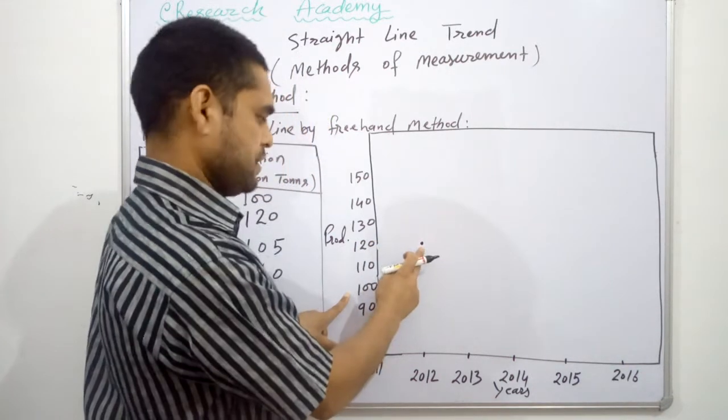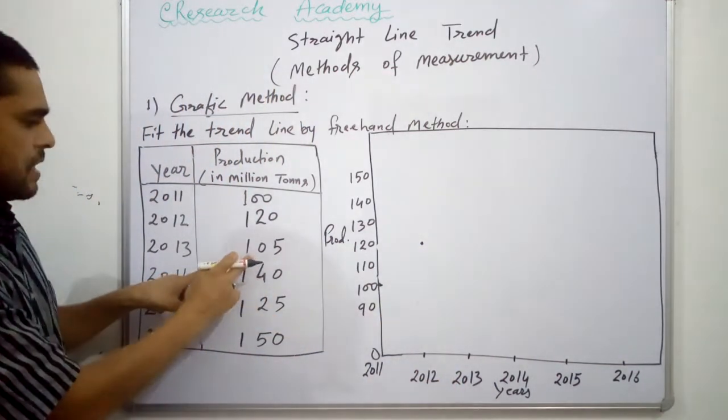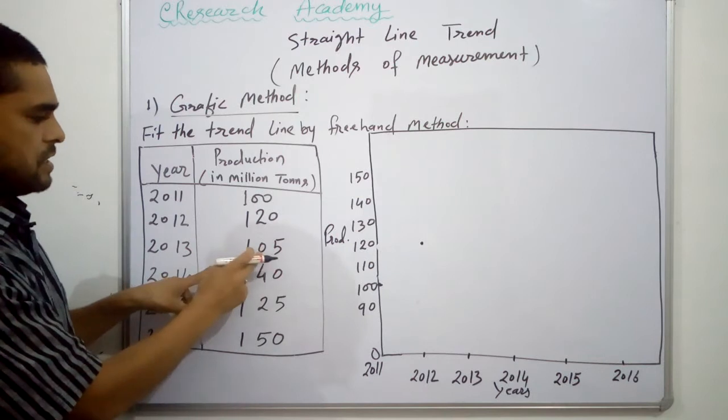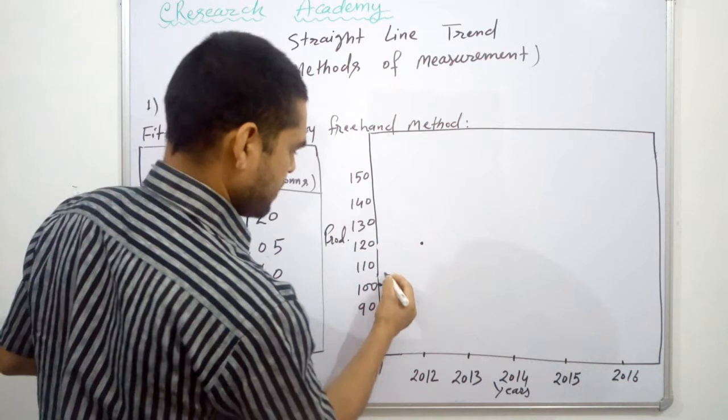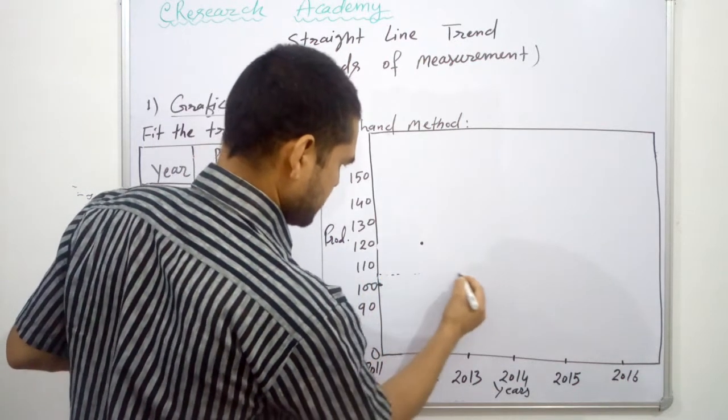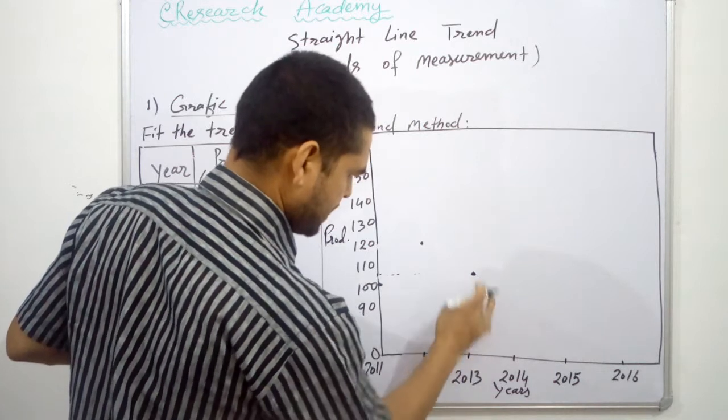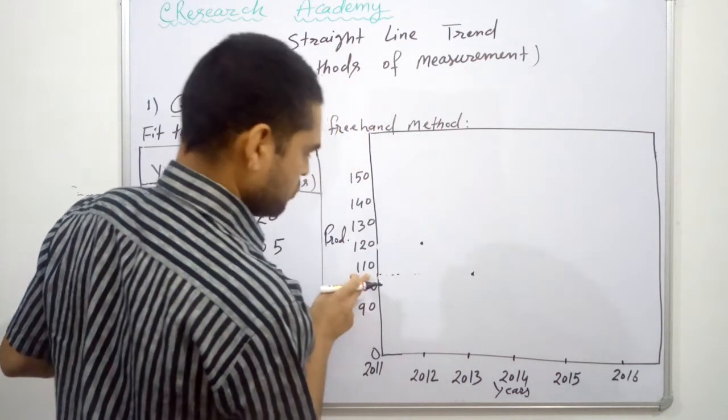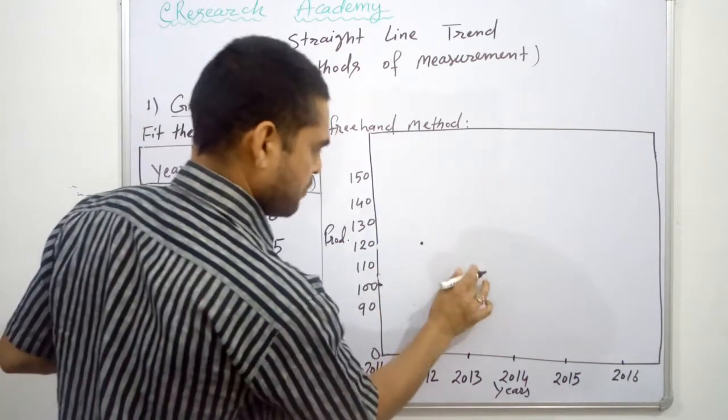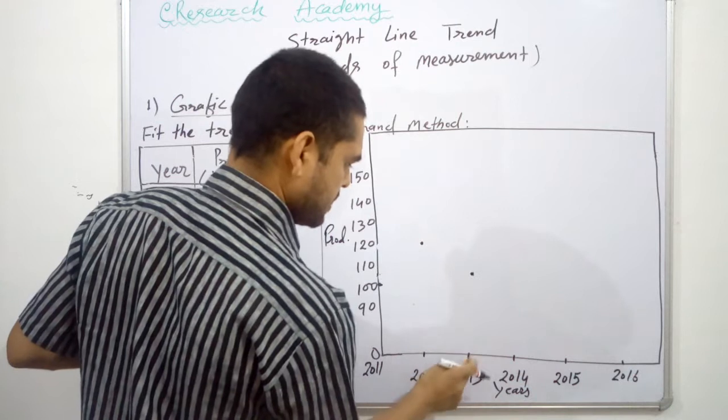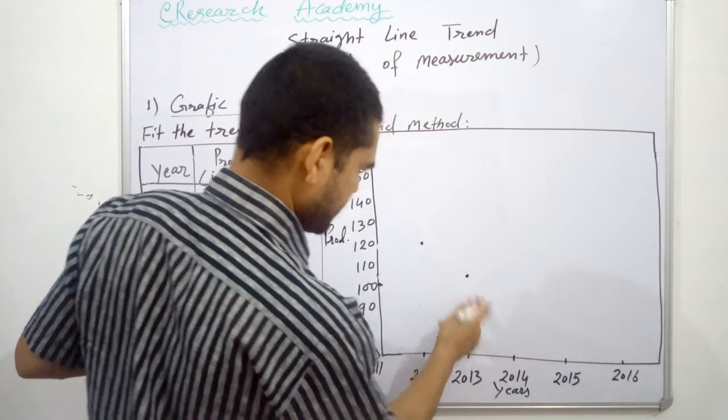Then for 2013, our production is 105. So 105 falls between 110 and 100, this is somewhere here, about 2013, and in front of 105. So this will be our second point, this one, about 2013. So this is the exact one.